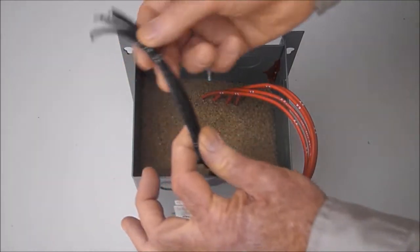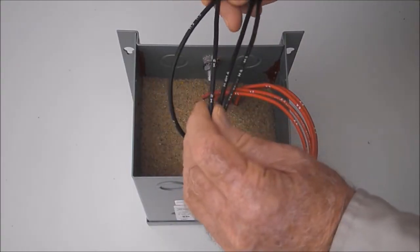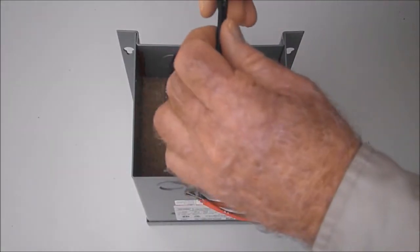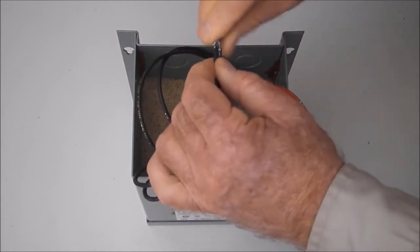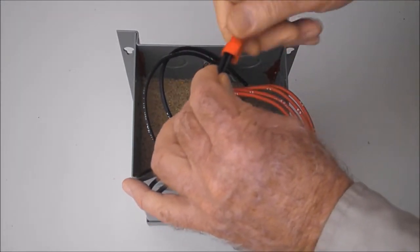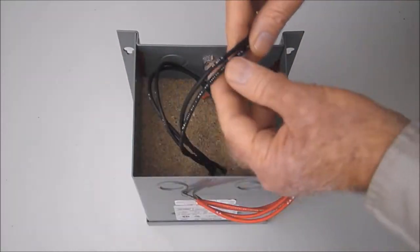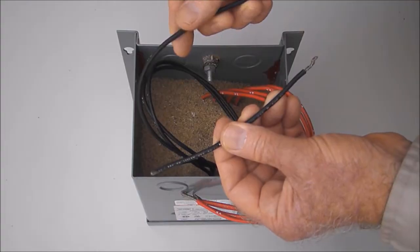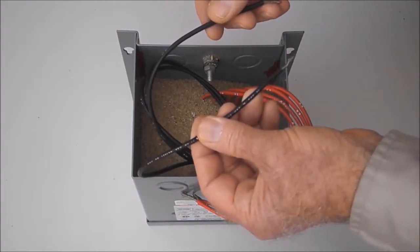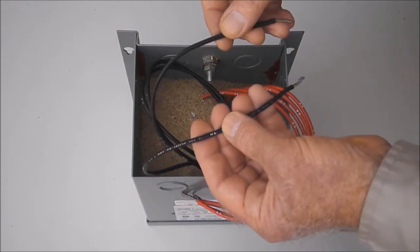We're going to start with the very popular 480 volt input on the primary. We're going to connect H2 and H3 together and tie them up with a wire nut, which leaves H1 and H4 as our 480 volt input. So one line of 480 volts will come in on H4 and the other will come in on H1.